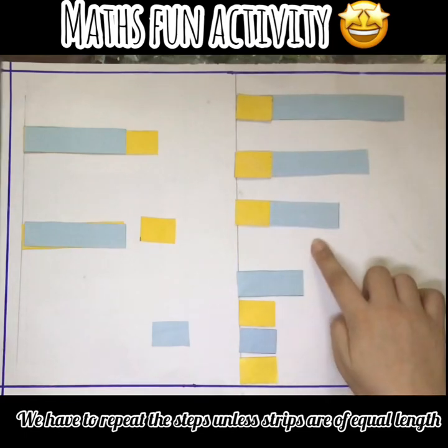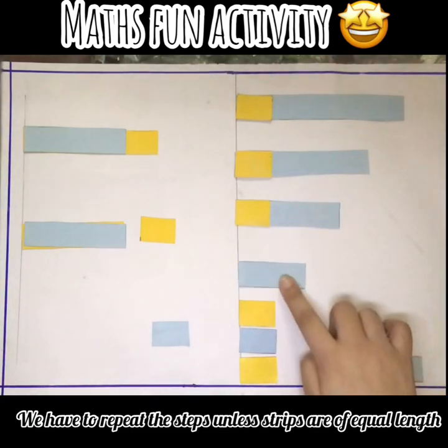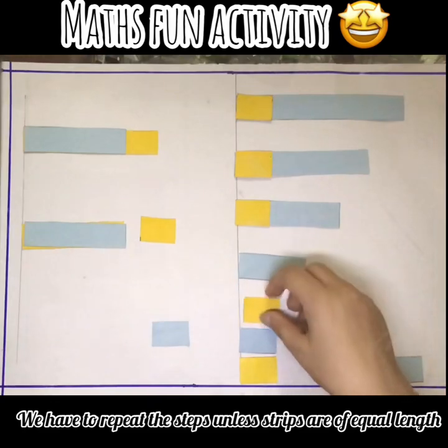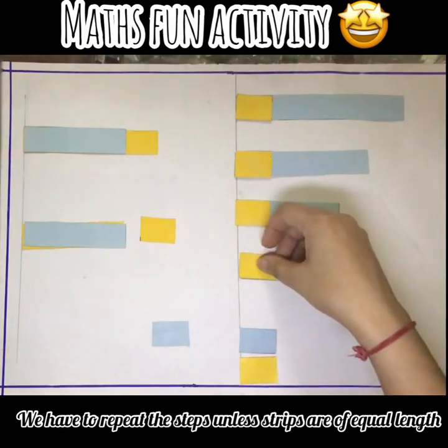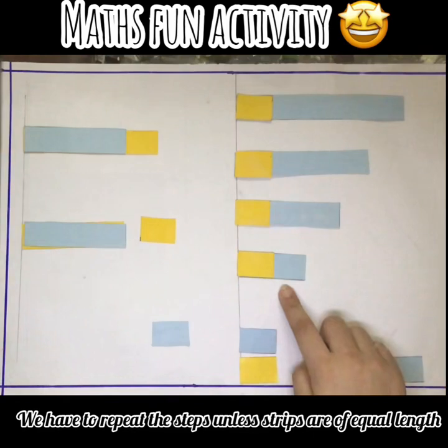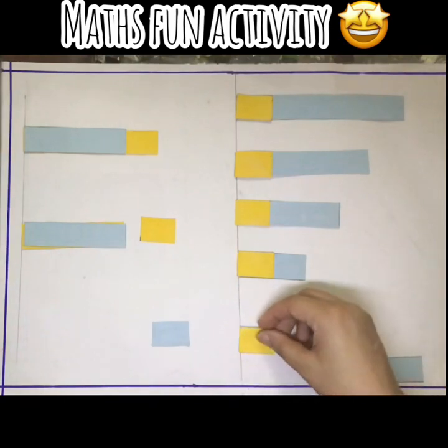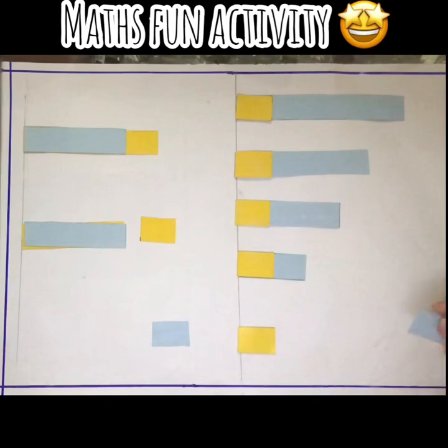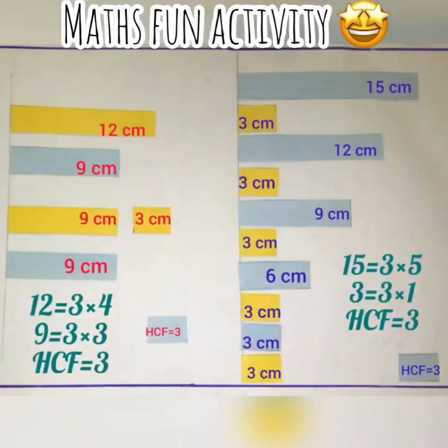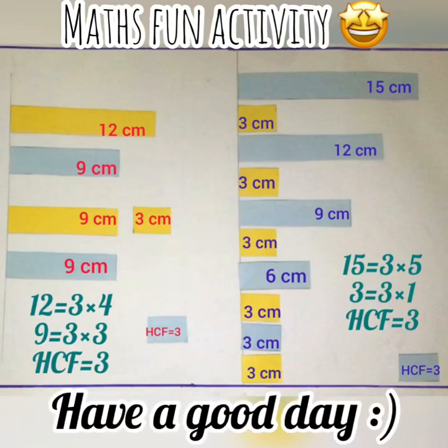Now both the strips are of equal measurement, right? So this shows that 3 centimeter is the HCF. You can clearly see in the video that it is getting cross-checked with our general method as well. I hope you enjoyed it. Have a good day.